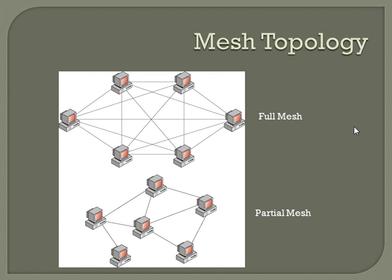Mesh topology — with a full mesh topology you have a connection from every node to every other node. As you can see from this diagram, that becomes extremely expensive to implement after a very small number of nodes. Even with just six nodes, there are a huge number of connections. There's also a partial mesh, where you don't have a complete connection to every single thing but you have multiple connections to multiple things. This is very resilient — you can lose all kinds of connections and the network remains intact — but it's extremely difficult and expensive to implement beyond a very small network.